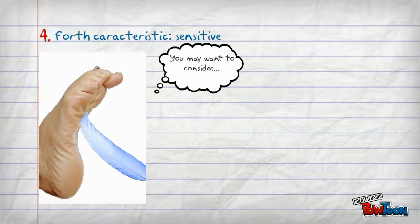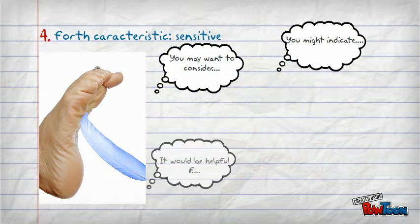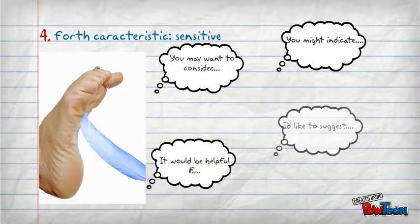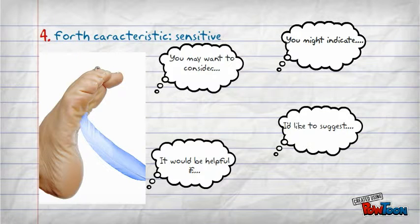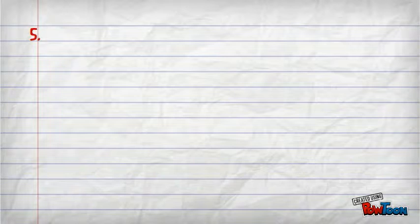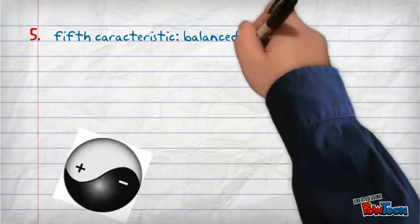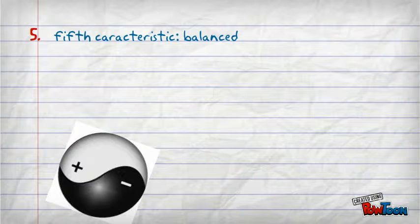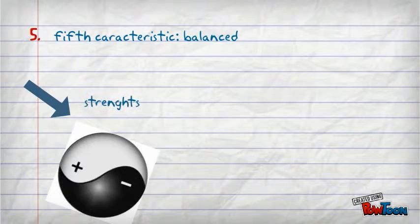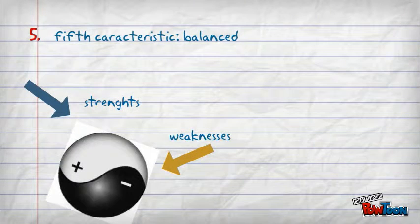The fourth characteristic is being sensitive. Give the recommendations in a very pleasant way. And the fifth characteristic is being balanced.